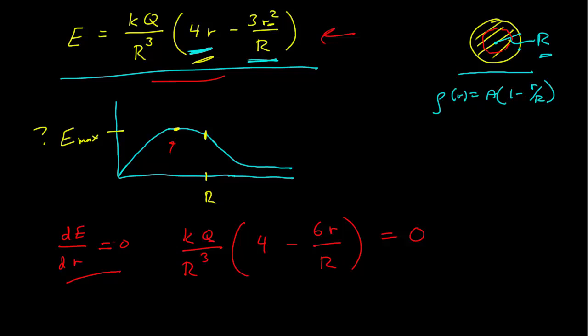And so for this to be 0, this has to be 0, and so 6R over capital R is equal to 4. Or then this occurs, I'm going to use this space up here, small r equals 2 thirds capital R.